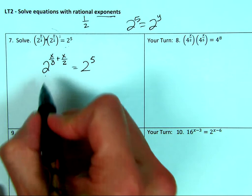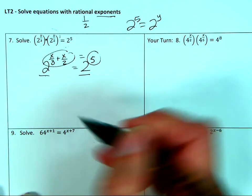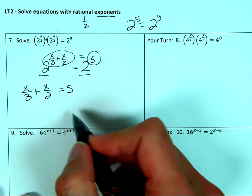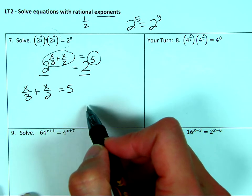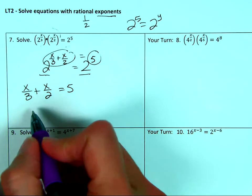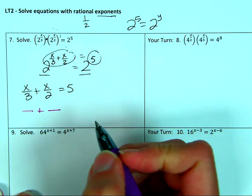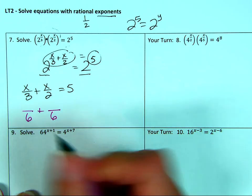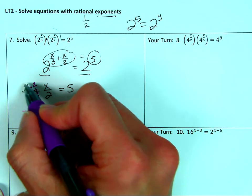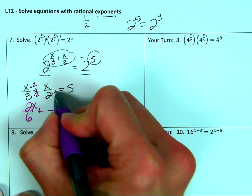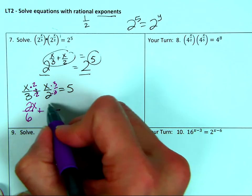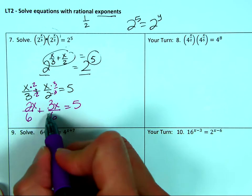Equals two to the fifth. Now that I have the bases the same, these exponents have to be equal — that's the only way to get that equation to be true. So there are a couple ways to solve this. I'm going to show you how to do it by adding the fractions. To add fractions, I find a common denominator — hopefully you know the common denominator is six. I have to rewrite each expression with a denominator of six, multiplying top and bottom by the same number so I'm not changing the value. So I get 2x over six, and then 3x over six.